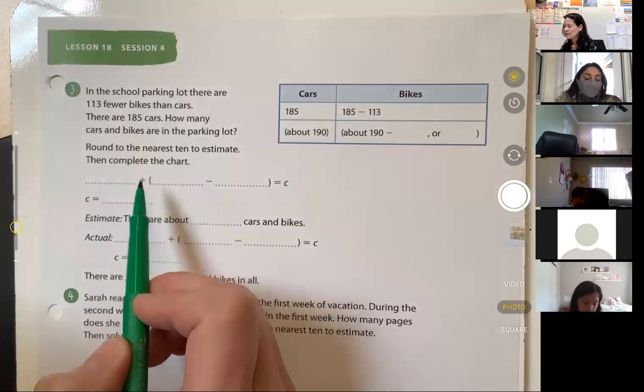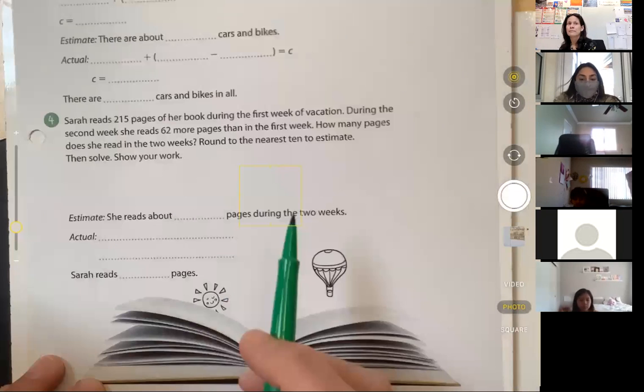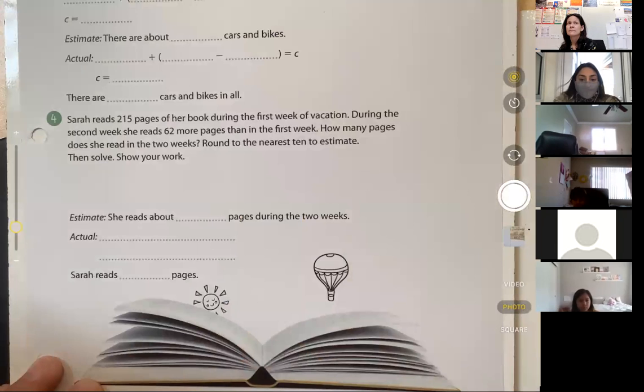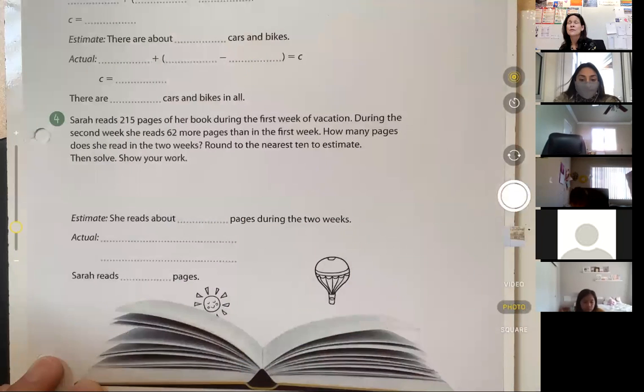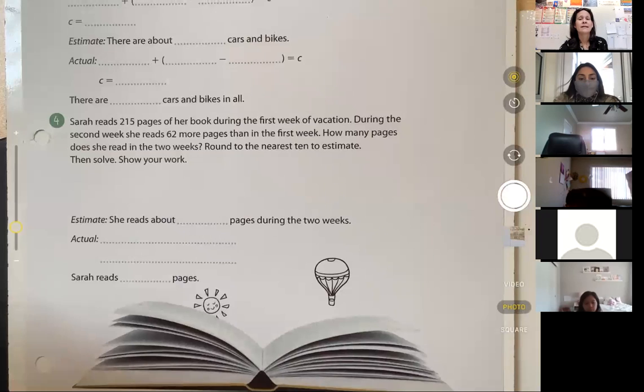In question four, it's going to talk about pages in a book. Be sure to close read these questions. Stop if you do not understand what the question is asking you. Okay? We're going to come back together for just a moment. We're going to have a brief discussion before the hybrid students go off to see. This is good. Thank you.